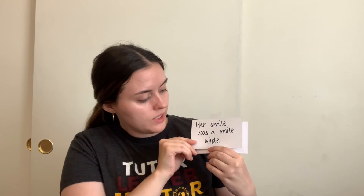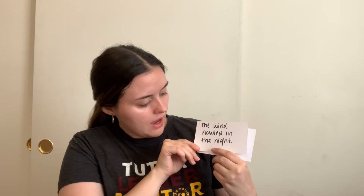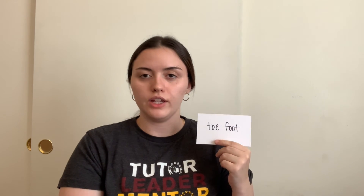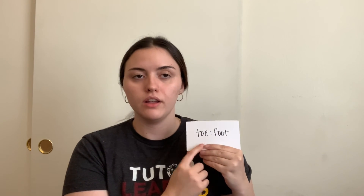Her smile was a mile wide — this is a hyperbole because it is an exaggeration. Nobody's smile is actually a mile wide, but we use this exaggeration to put emphasis on her smile. The wind howled in the night — this is personification because we are giving human or alive abilities to a non-human or inanimate object like wind. And lastly, toe to foot — this is a part to whole relationship because we are comparing a part of something to the whole.